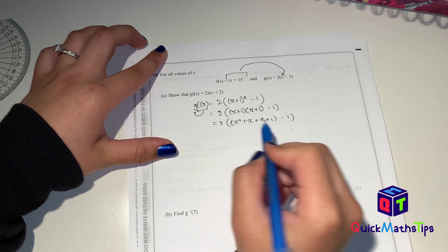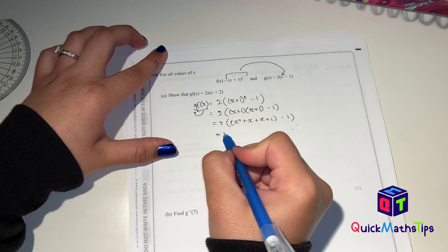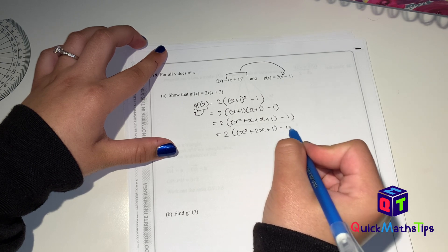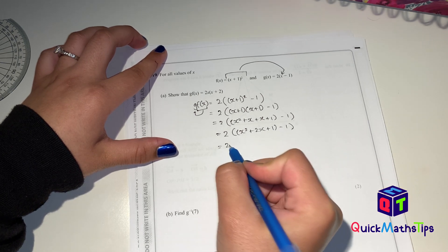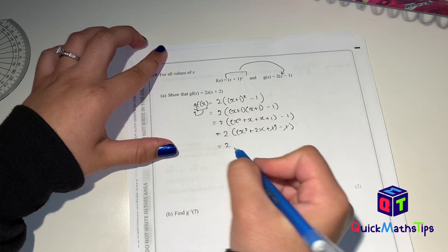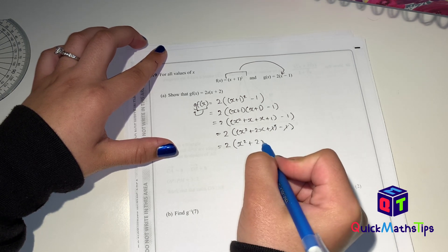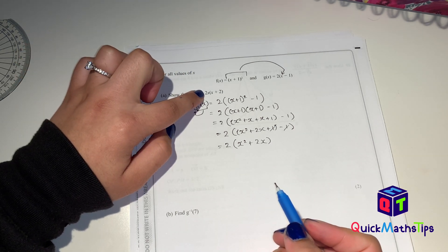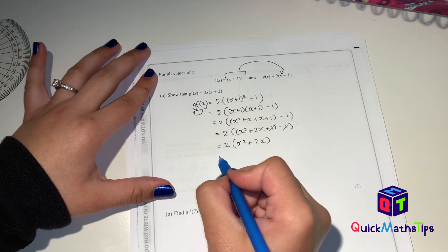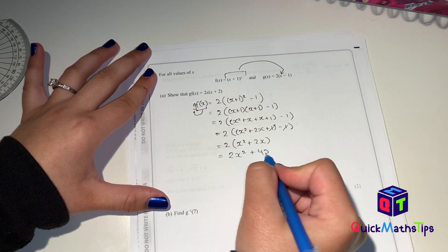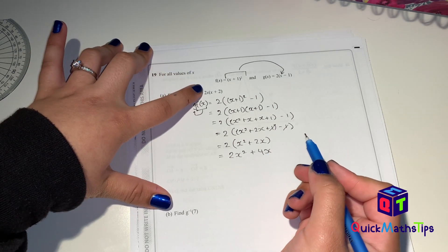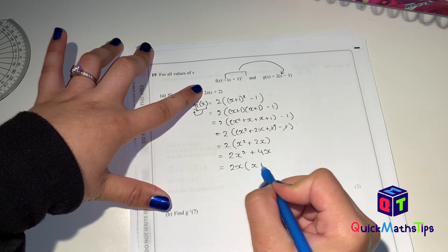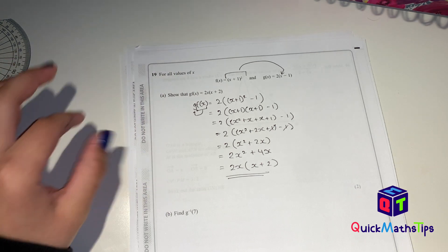Simplifying inside the bracket: x² + 2x + 1 − 1. The +1 and −1 cancel, leaving x² + 2x inside the bracket. Expanding: 2(x² + 2x) gives 2x² + 4x. Factorising by 2x: 2x² ÷ 2x = x, and 4x ÷ 2x = 2, giving 2x(x + 2). Therefore gf(x) = 2x(x + 2) — wait, the question proves 2x(x − 2) — as shown and proven.